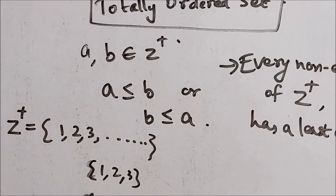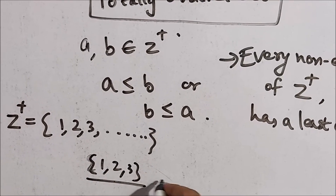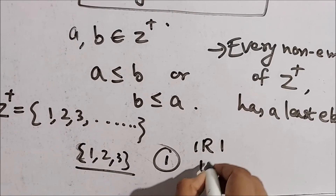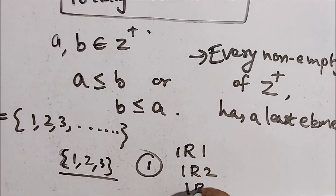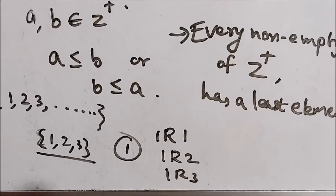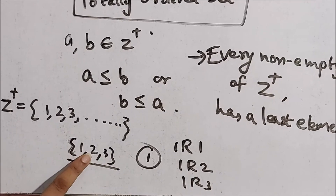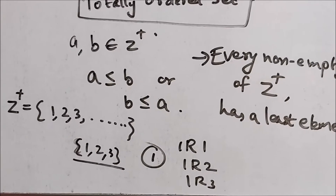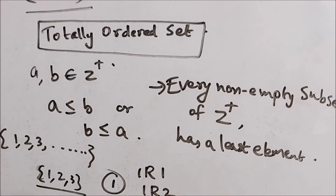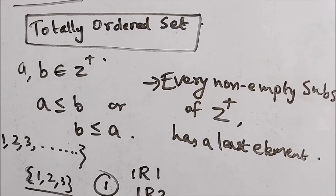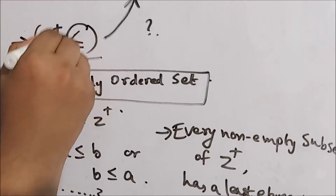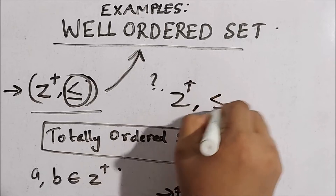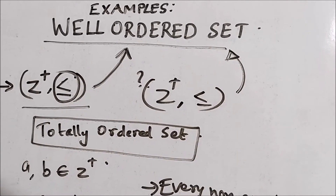For example, if the subset you take is {1, 2, 3}, there is a least element which is 1, because 1 is related to 1, 1 is related to 2, and 1 is related to 3 — that is, 1 ≤ 1, 1 < 2, and 1 < 3. So if you take any non-empty subset of the set of positive integers, there will be a least element when the relation is less than or equal to. That's why (ℤ⁺, ≤) is a well-ordered set.